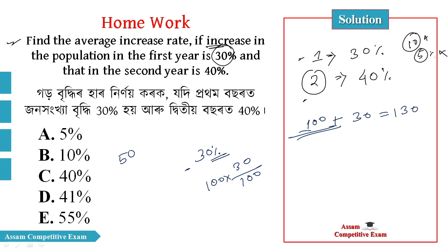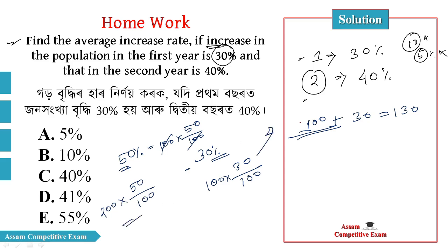If you have 50%, then 100 into 50 by 100. And if you have 50%, then 200 into 50 divided by 100. The first one: 30% increase.